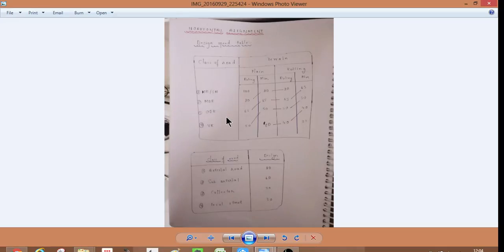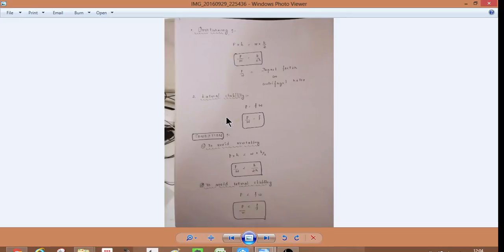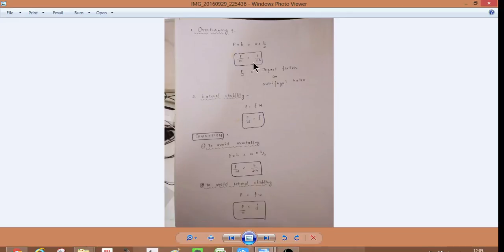And then, horizontal alignments. Horizontal curves. Then you have this. So, see this figure. This is P. This is weight type. P into H by 2. W into what? P into this H. W into B by 2. That's it. You have to remember that. P into H is equal to W into B by 2. And P is equal to F into W.